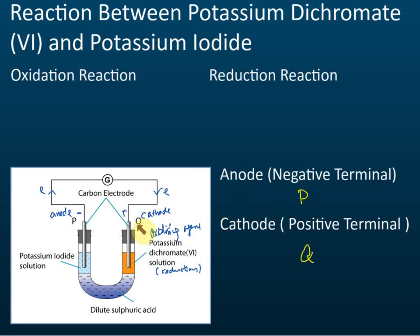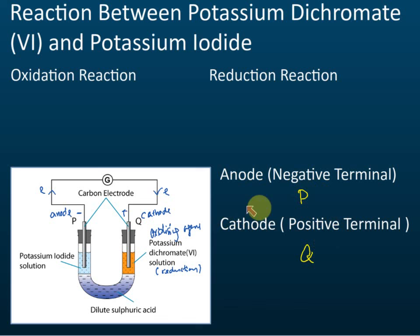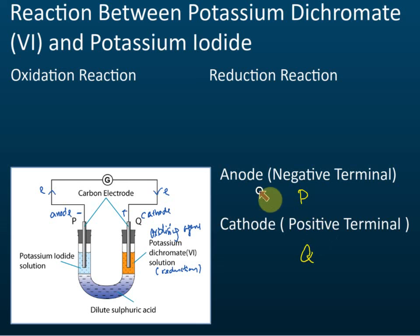After identifying which is the anode and which is the cathode, and which is negative and which is positive, the next thing we need to know is the reactions that occur at the cathode and the anode.